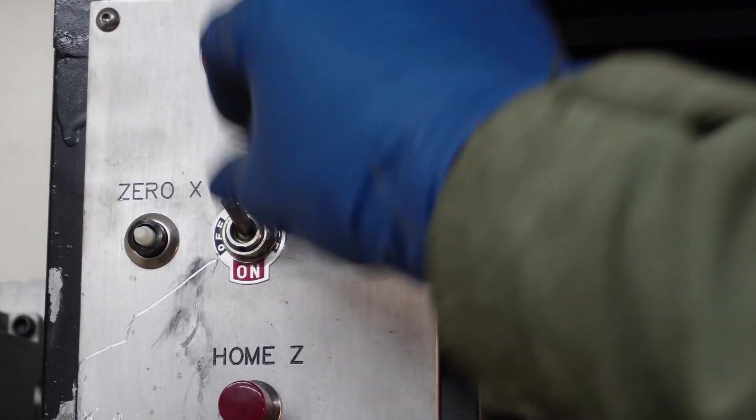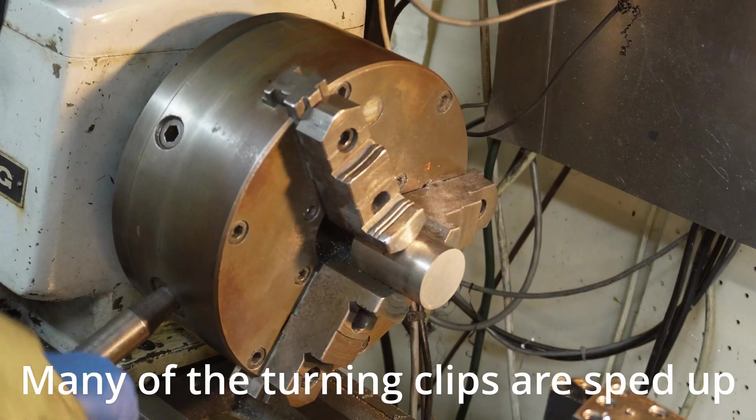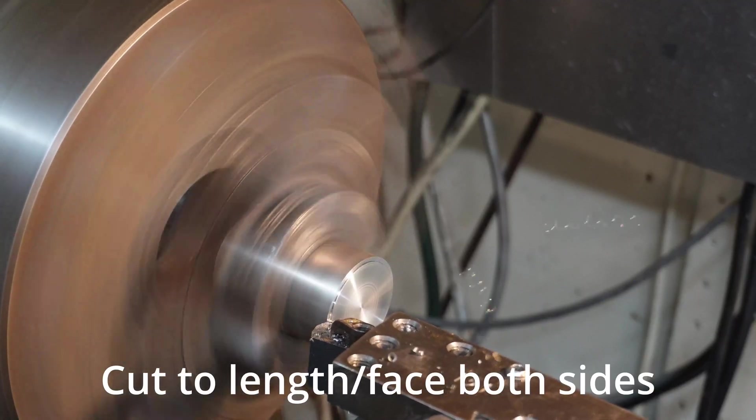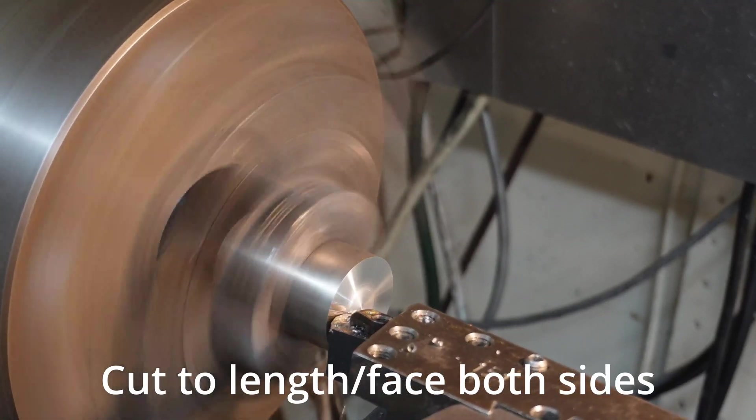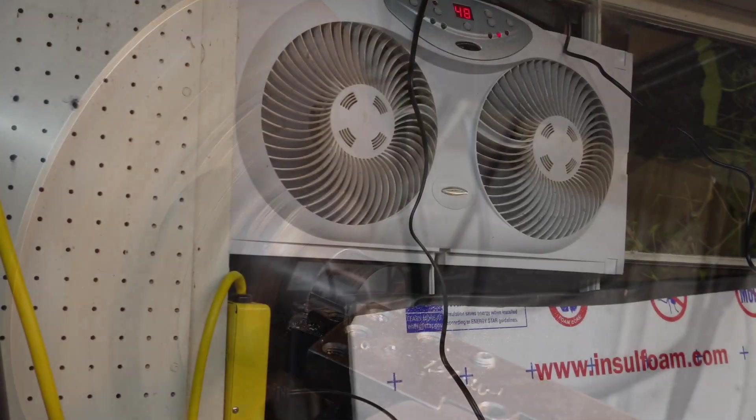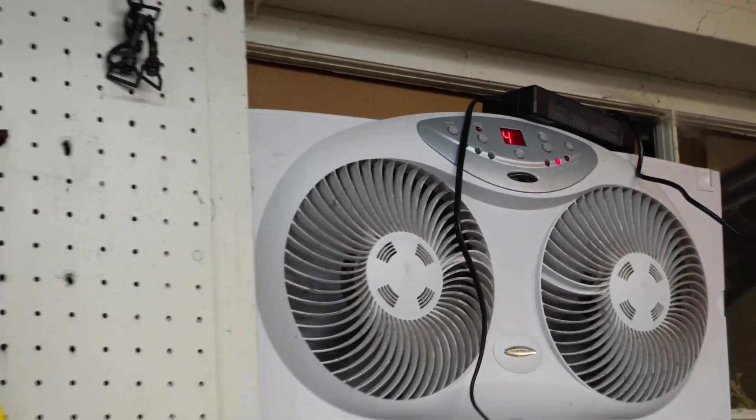Now we turn this guy on and set it a little. We want 52 millimeters. 48 degrees, warmer than it's been, kind of nice actually.